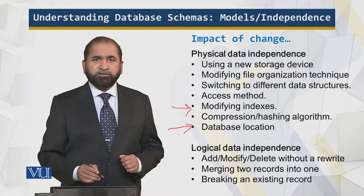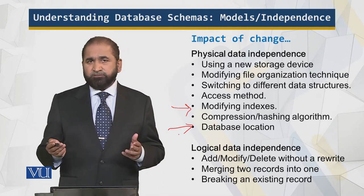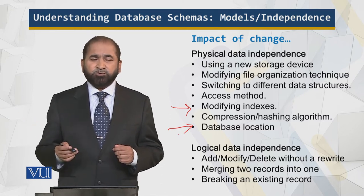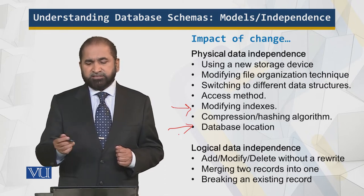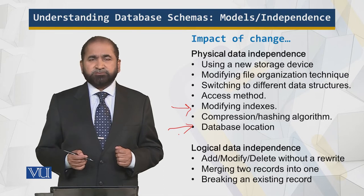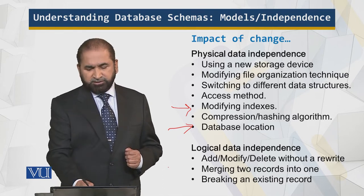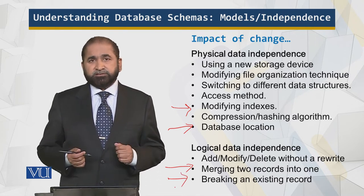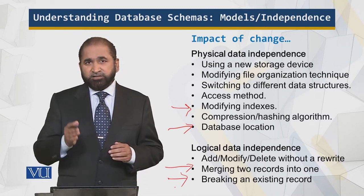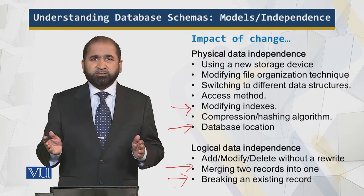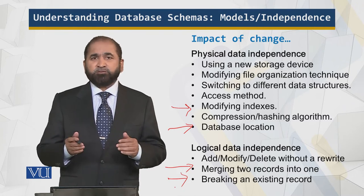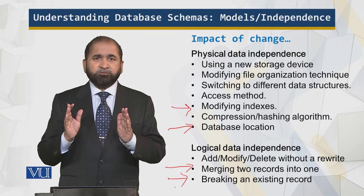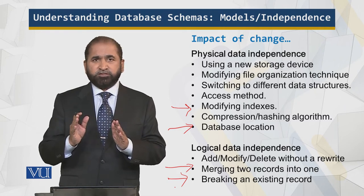Database location is another aspect of physical data independence: it is irrelevant whether the data is stored on your machine, on the server, across the continent, or over a cloud. Then in logical data independence, you can have merging of two records or break an existing record. Why do we need to break or combine records? These are performance issues. But to the programmer or to the user, everything is in the table as defined for the corresponding model and schema.